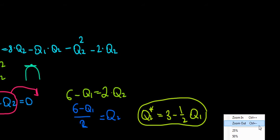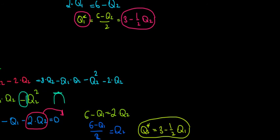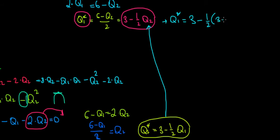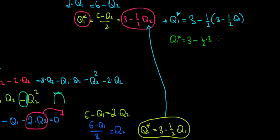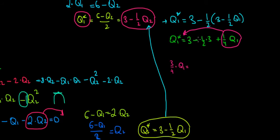Substituting Q2 = 3 - (1/2)Q1 into Q1's reaction function: Q1 = 3 - (1/2)(3 - (1/2)Q1). Opening the brackets: Q1 = 3 - one-half times three plus one-half times one-half Q1, which gives Q1 = 3 - 3/2 + (1/4)Q1. Bringing the Q1 terms together: Q1 - (1/4)Q1 = three-quarters Q1 on the left side.